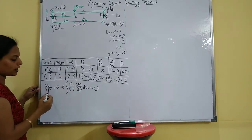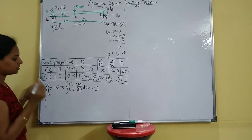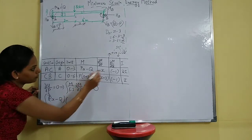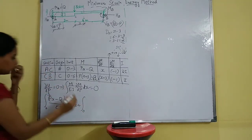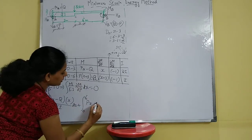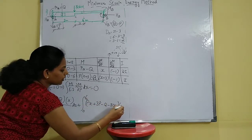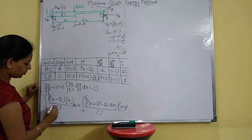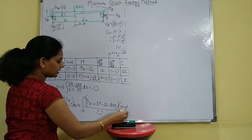Apply the formula: ∂U/∂P = 0, that is ∫(M/EI)(∂M/∂P) dx = 0. From 0 to 3: (PX − Q)(X) divided by 2EI dx, plus from 0 to 6: (PX + 3P − Q − 80X)(X + 3) divided by EI dx equals 0.